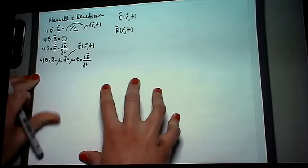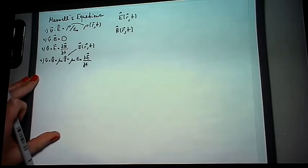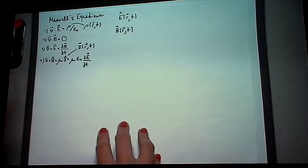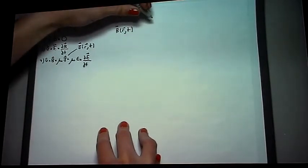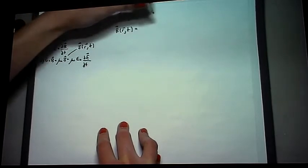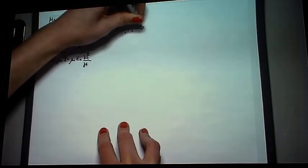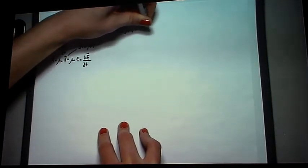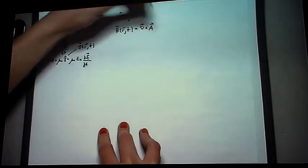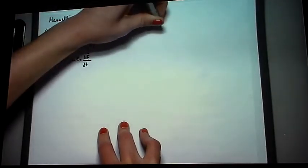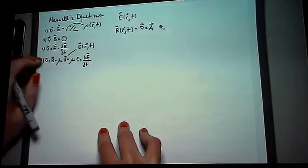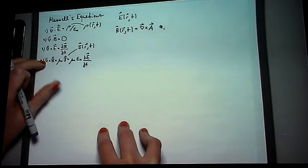Finding the electric and magnetic fields is easier if we express them in terms of potentials. The magnetic field is divergence-less, so it can be written like this, using the vector potential A. Let's put an asterisk and a little one next to this equation, so that we can remember it later.